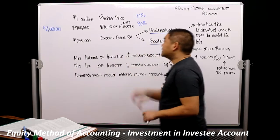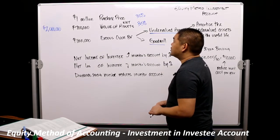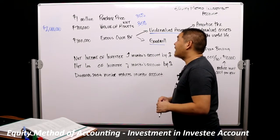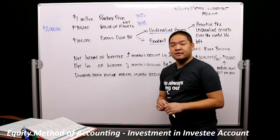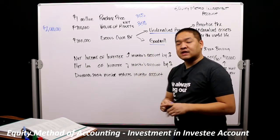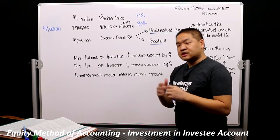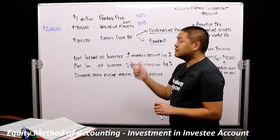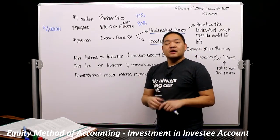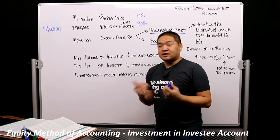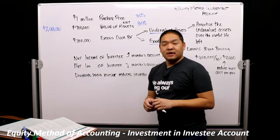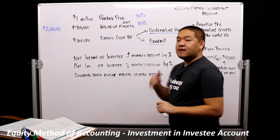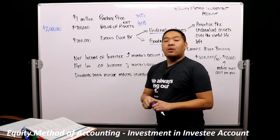Here's our example. We have a million-dollar purchase price, so we're purchasing company A for a million dollars. However, the book value of the net assets is only $700,000. We take all of their assets, take all of their liabilities, subtract the liabilities from their assets, and we get a book value of $2 million. 35% ownership would mean that we should have paid $700,000, but in this case we've paid a million dollars. So if we pay more than it's worth, what do we do with it?